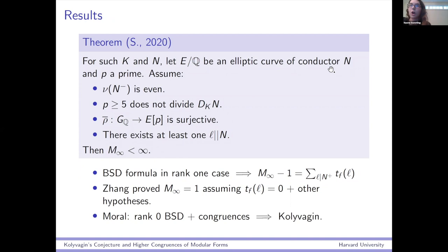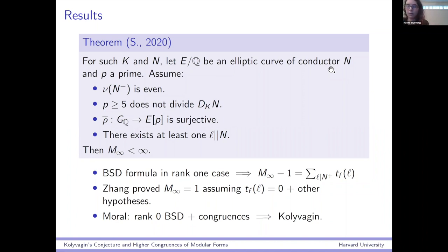Here's the main result of the talk: M_infinity is finite. So Kolyvagin's conjecture holds, and there are some technical hypotheses. The first hypothesis — that N_minus has an even number of prime factors — is in some sense the most meaningful, as we use it in order to construct the classes in the first place. The rest of the hypotheses are more technical and less fundamental.